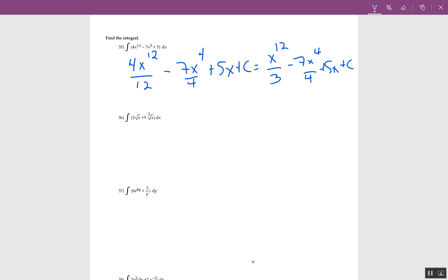This next one has 2 times the square root of x plus 9 times the cube root of x dx. The first step is to rewrite it, so this is 2x to the 1/2 plus 9x to the 1/3 dx. For each of these I'm going to add 1 to the exponent, so 1 plus 1/2 is 3/2. Then divide by 3/2.